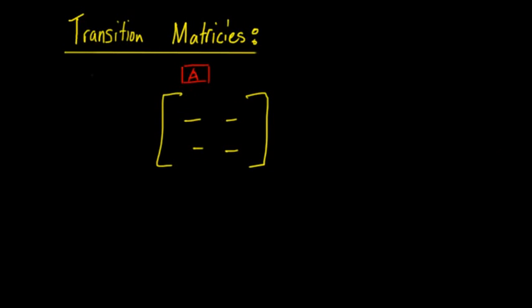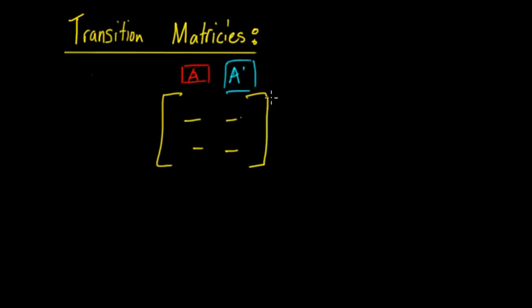And then you have A dash, which is like the failure. As you remember in Markov chains, there are two outcomes, so this represents one outcome and this represents the other.